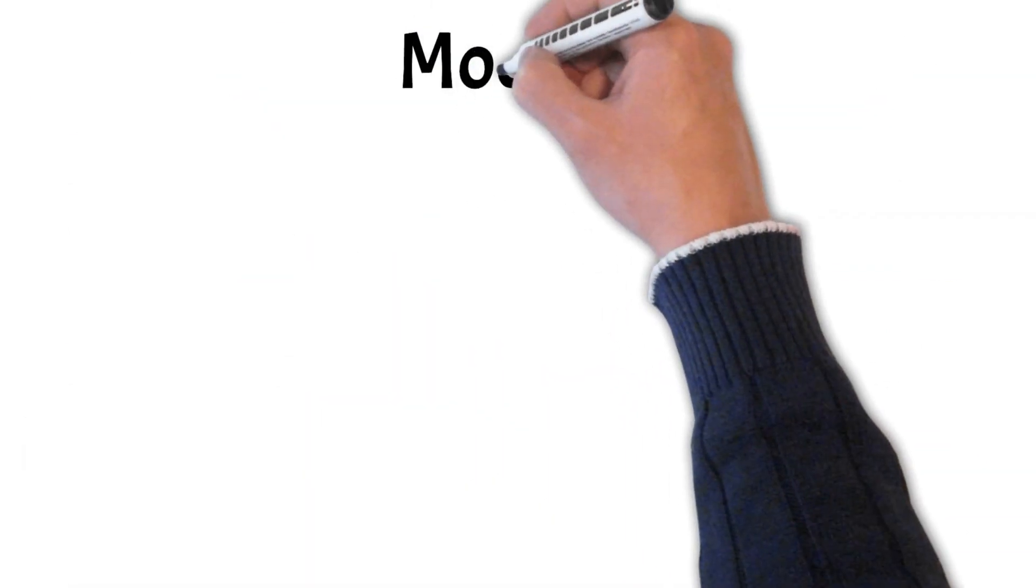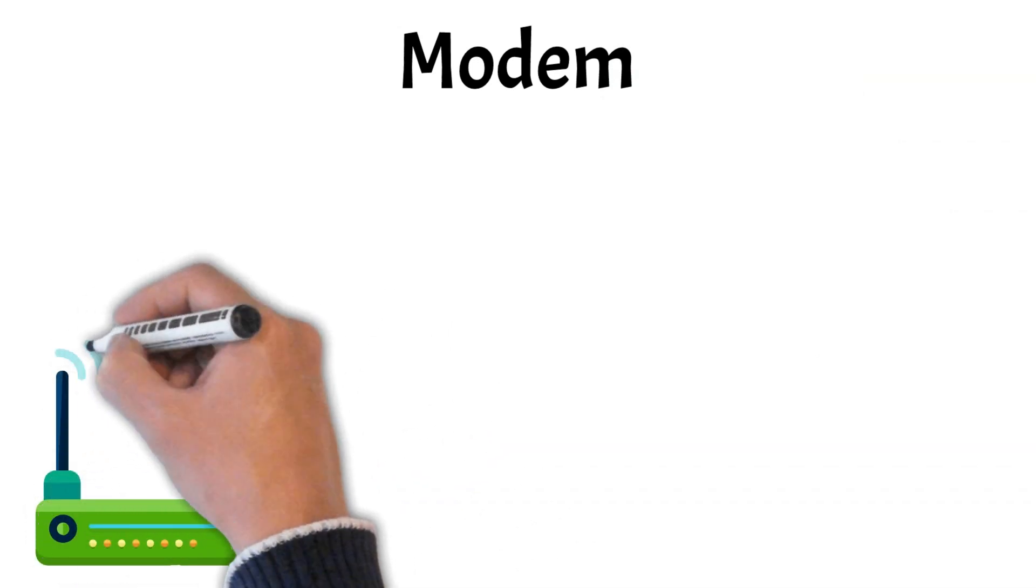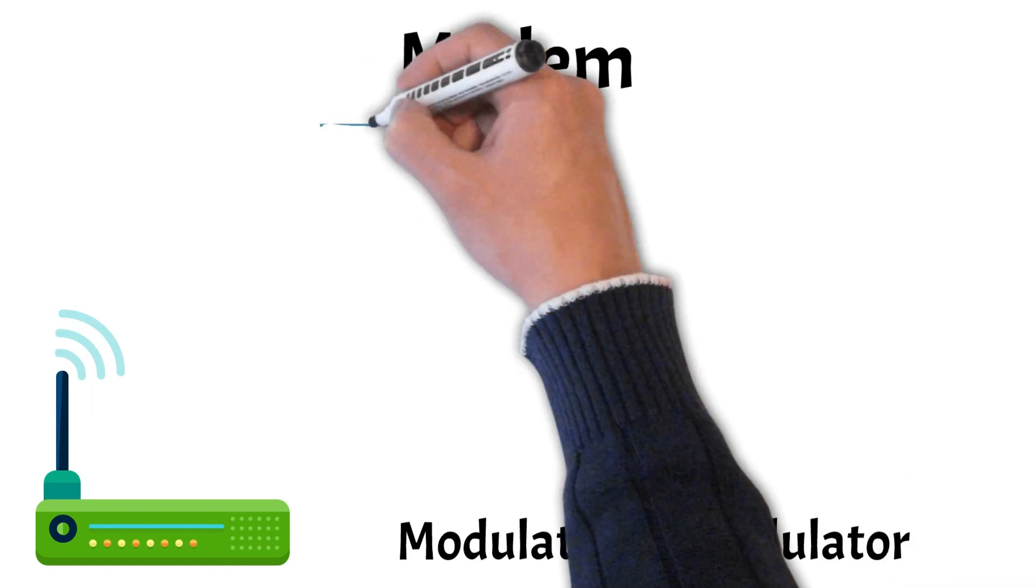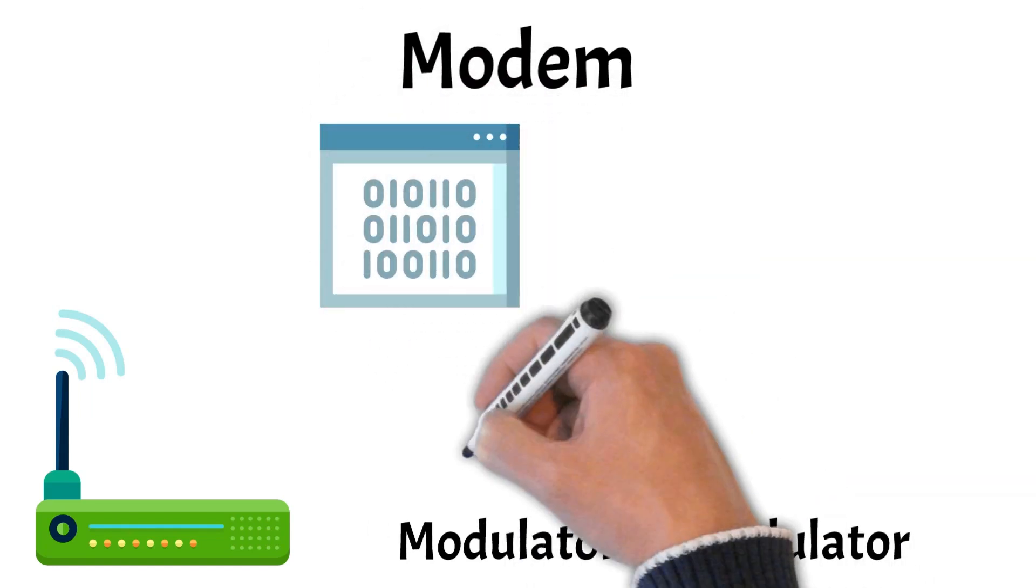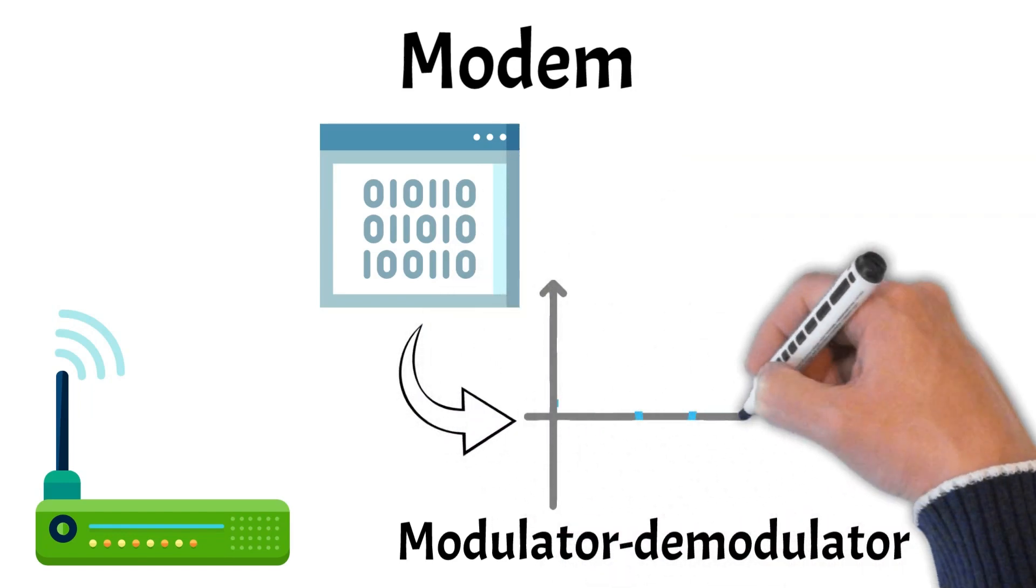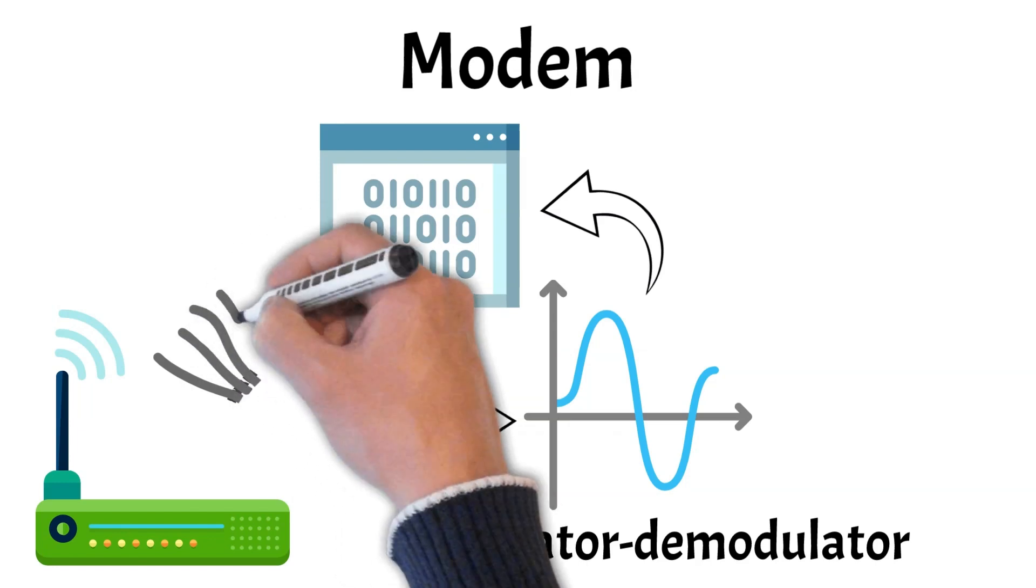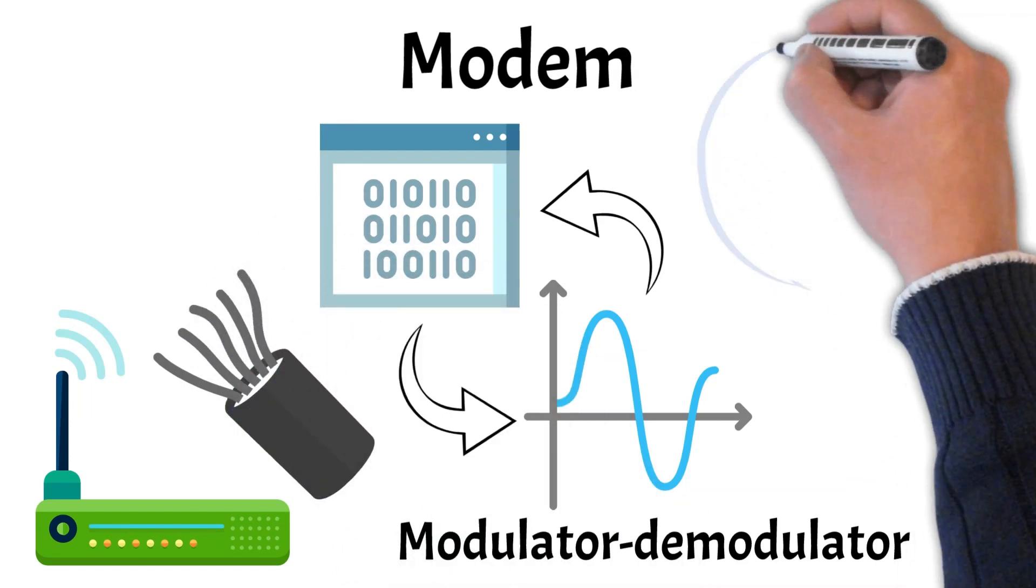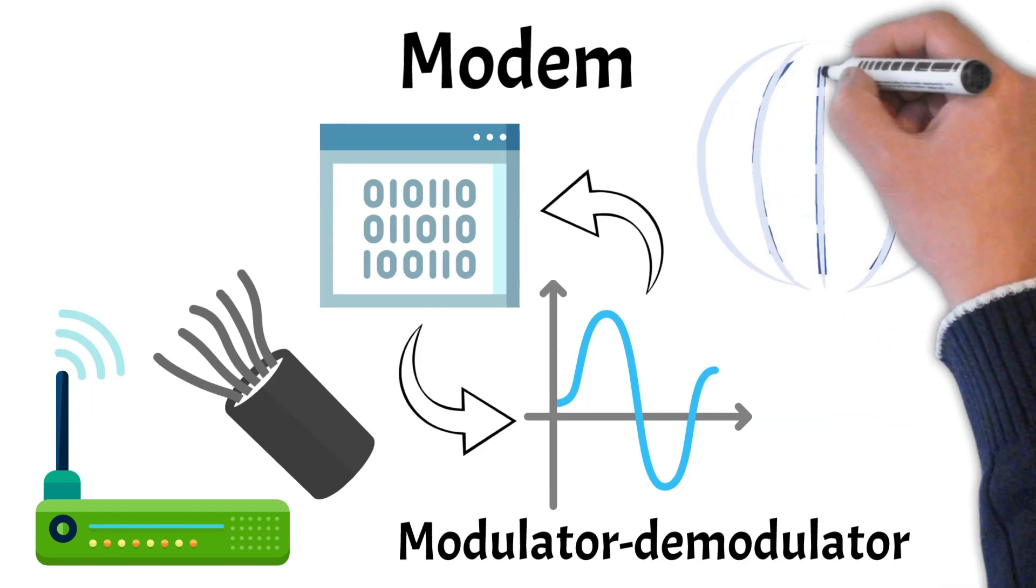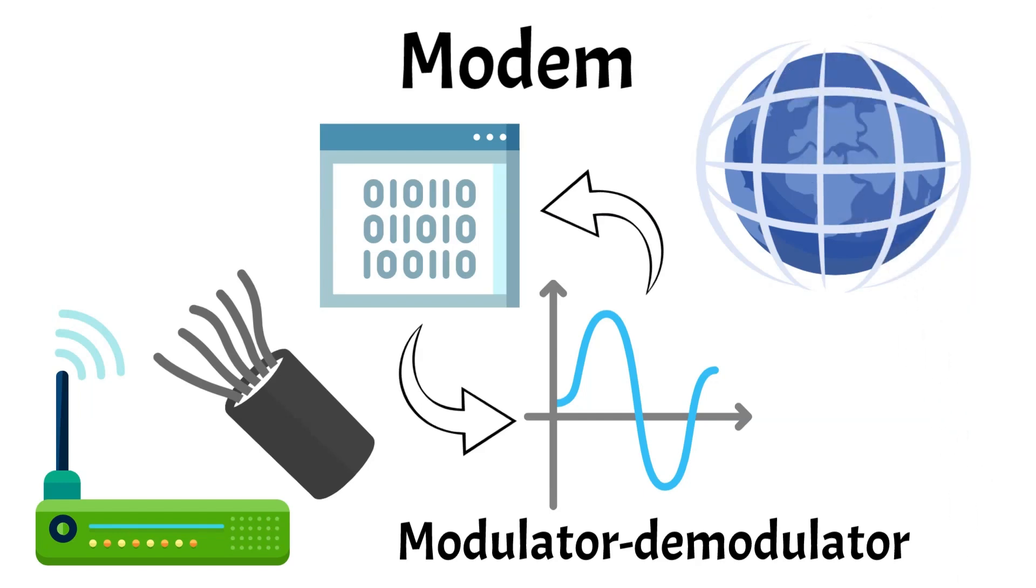Now let's look at another essential device in your network setup, the modem. Short for modulator-demodulator, a modem connects your local network to the internet by converting digital data from your devices into analog signals that can be transmitted over telephone lines, cable or fiber optics, and vice versa. Unlike a router, which directs traffic within a local network and between different networks, a modem's primary function is to provide access to the internet by communicating with your internet service provider, ISP.